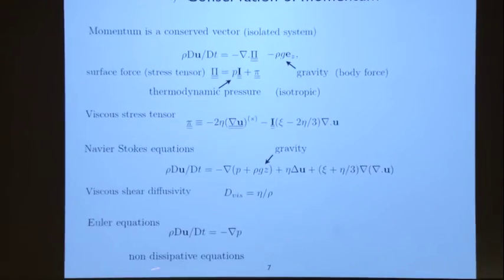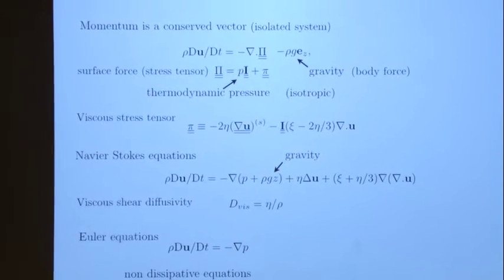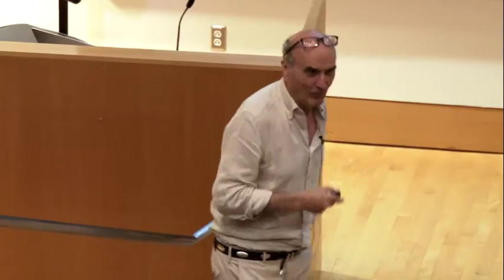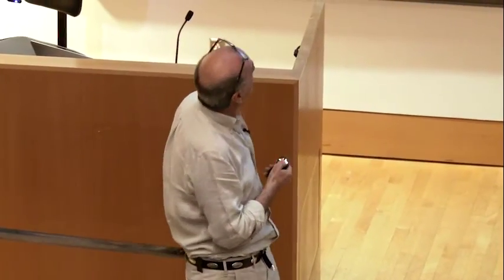This is the Euler equation, written by Euler himself, who was the first scientist to understand that convection proceeds through propagation of waves. Now we go to the total energy.